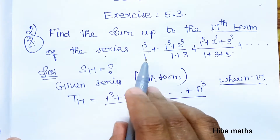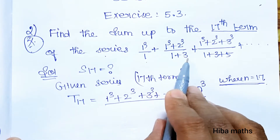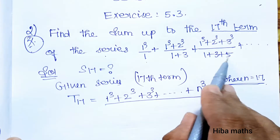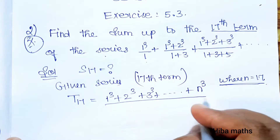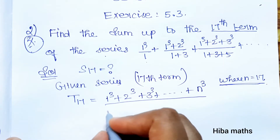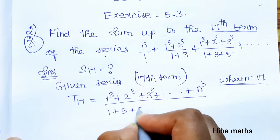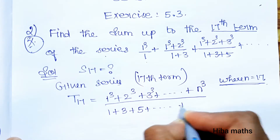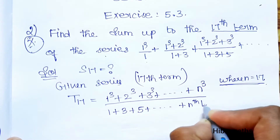The denominator is the sum of odd numbers: 1 + 3 + 5 + ... up to the nth odd number. So the denominator is 1 + 3 + 5 and so on, up to the nth term.